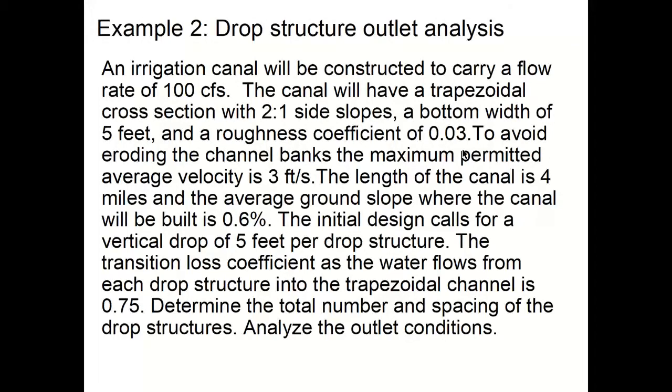To avoid eroding the channel banks, the maximum permitted average velocity is 3 feet per second. The length of the canal is 4 miles and the average ground slope where the canal will be built is 0.6%. The initial design calls for a vertical drop of 5 feet per drop structure.